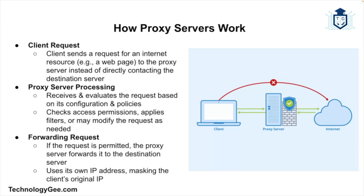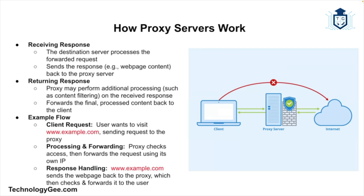If the request is allowed, the proxy server forwards it to the destination server on behalf of the client, using its own IP address instead of the client's IP address. Then there is receiving the response: the destination server processes the request and sends the response back to the proxy server, which then processes it if necessary and sends it back to the client. Here's a quick example: a user wants to visit a website, so the request is sent to the proxy server.